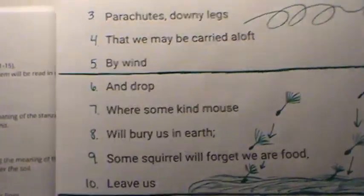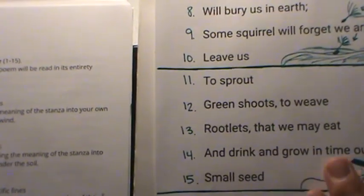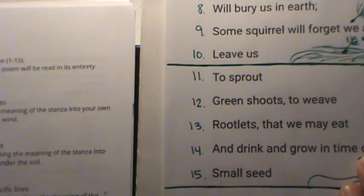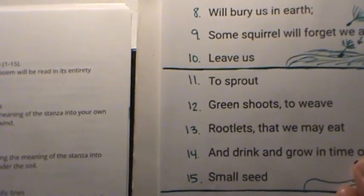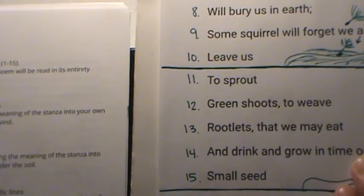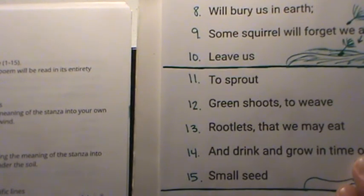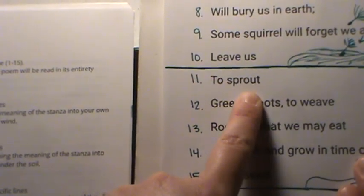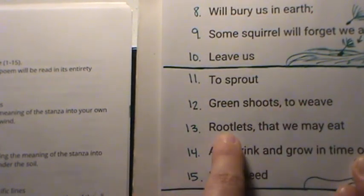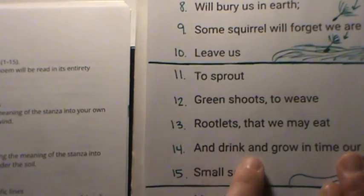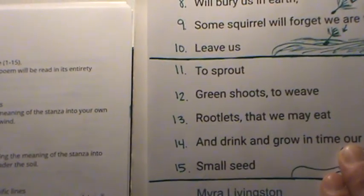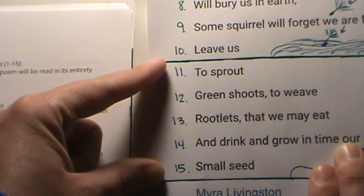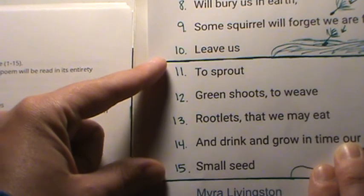The last part of your task is reading the final five lines, and now you're going to draw an illustration and write a sentence on your own, independently — no help. Try to do this independently: illustrate what you think this means and put it into a sentence. To sprout green shoots, to weave rootlets, that we may eat and drink and grow in time our own small seed. Go ahead and pause the video, draw and illustrate what you think — what part of the plant life cycle is going on now — and then explain it in a sentence.